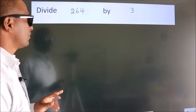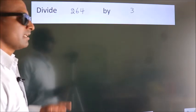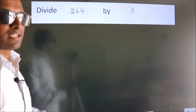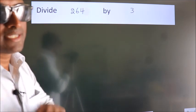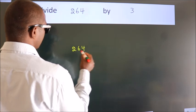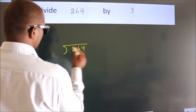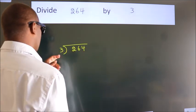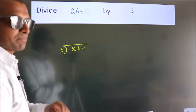Divide 264 by 3. To do this division, we should frame it in this way: 264 here, 3 here. This is your step 1.